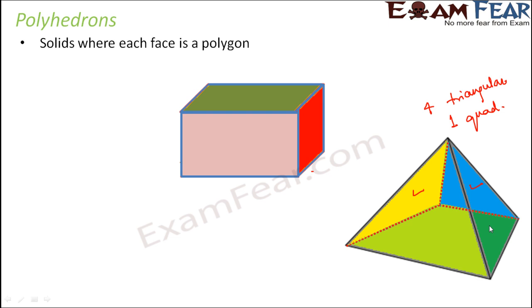So this is basically a solid where each face is a polygon, so this is also a polyhedron. Think of a cube - in case of a cube, each face is a square, which is a polygon, and therefore this is also a polyhedron.